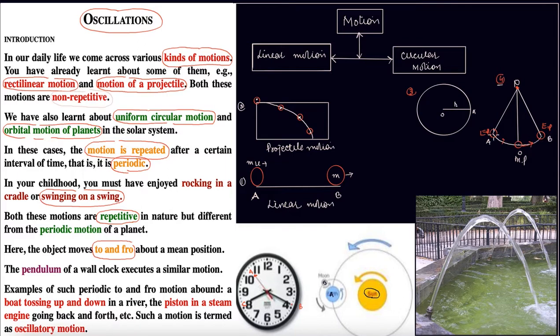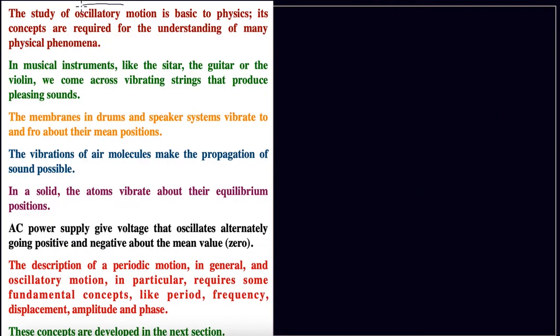The swing goes forward, backward, forward, backward around the mean position - this is how it swings back and forth. This motion is also oscillatory motion. Examples of such periodic to-and-fro motion include a boat tossing up and down in water, and a piston in a steam engine going back and forth. Such motion is termed oscillatory motion.